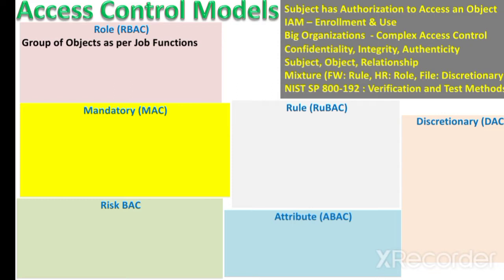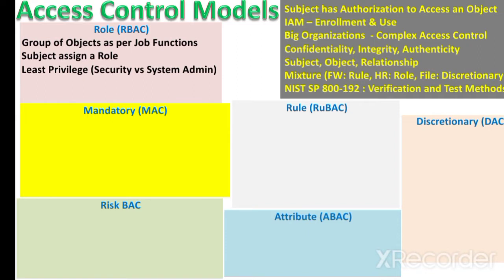In role-based access control, objects are grouped together as per the job functions of a subject, and then we make a subject part of a role. A role is access to a group of objects as per the job function of that role. Whenever any new subject arrives, we assign a specific role to that subject. All subjects assigned the same role have the same level of access, which ensures the principle of least privilege.